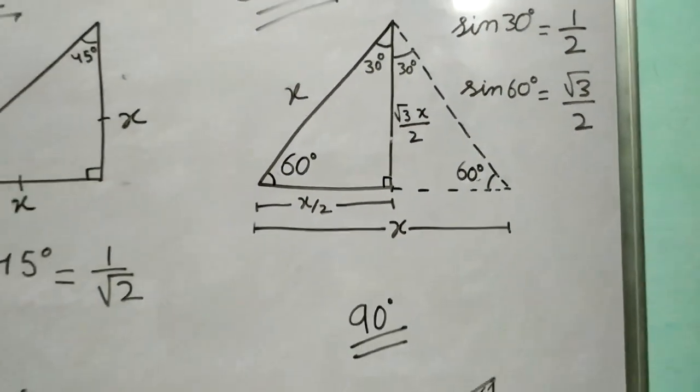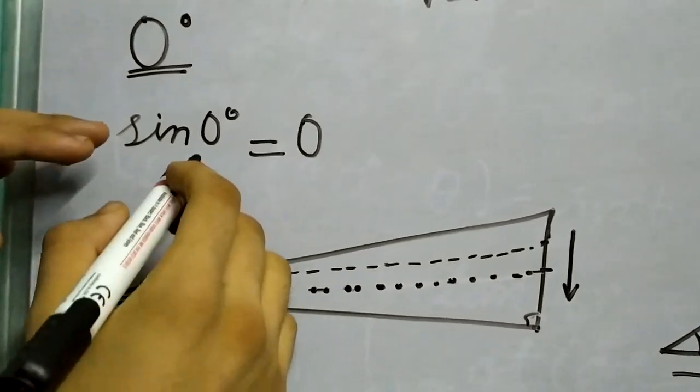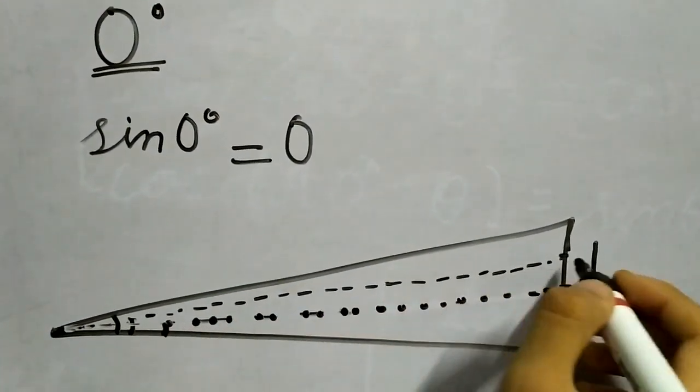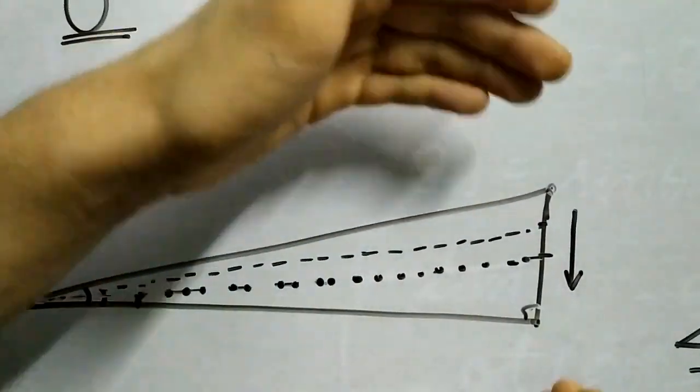And then we moved on, we took two pages, shifted them, and solved the value for 0 degree. So how did we do this? We constructed a triangle and then we reduced this length. So this perpendicular reduced.